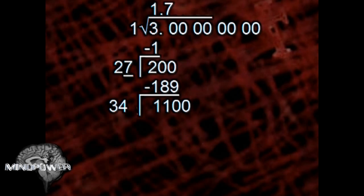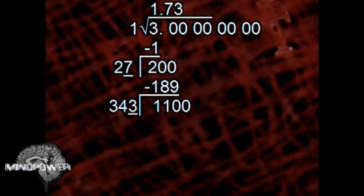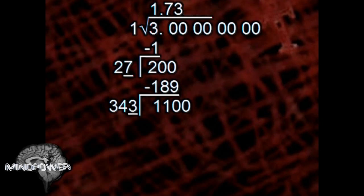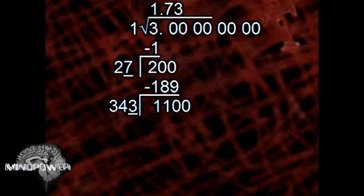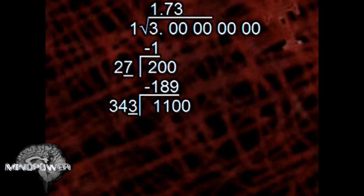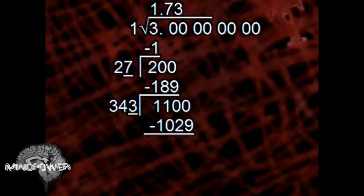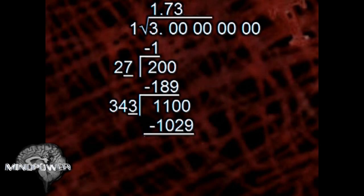And we need another digit next to the 34. It's going to be 340-something. 3 is the largest number we can use because 3 times 343 is still smaller than 1,100. 3 times 343 equals 1,029. We need to subtract that from 1,100, and that would be 71.